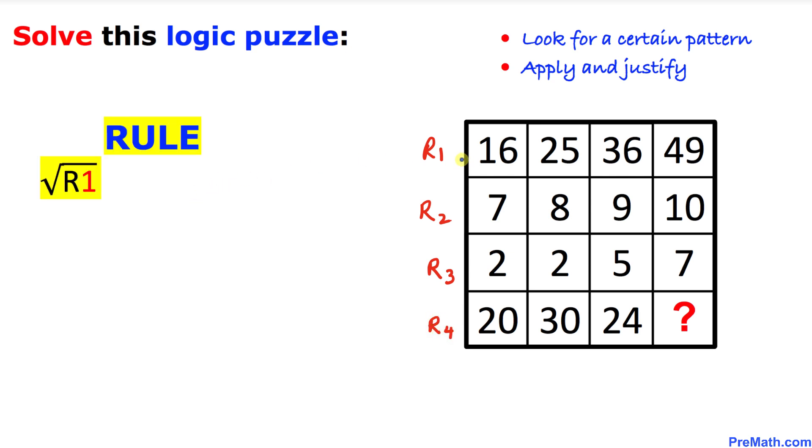And now let's look at this row 1, r1. Let's go ahead and take the square root of all these numbers. So square root of 16 is 4, square root of 25 is 5, square root of 36 is 6, and square root of 49 is 7.